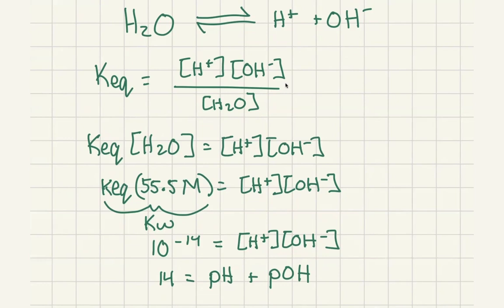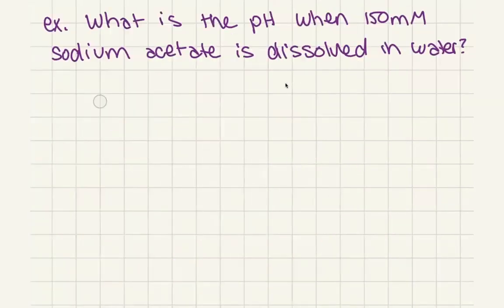When we measure pH we're talking about proton concentration, but when we add a base — when we're increasing OH⁻ — what we're doing is indirectly decreasing our proton concentration in order to compensate and keep Kw constant. So now let's use that knowledge to solve a question about what happens when we dissolve a base.